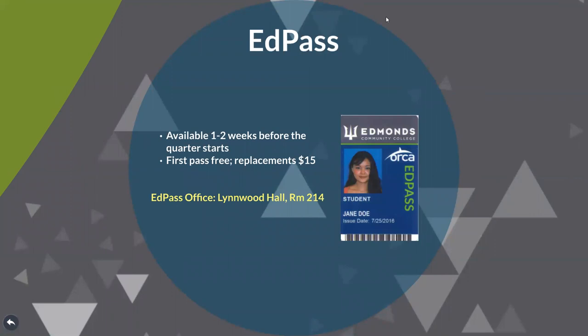As a student on campus, it is important to have an EdPass and a parking permit if you intend to drive. You can pick up your EdPass one to two weeks before classes start, as long as you've registered for classes that quarter. The EdPass office is located in Linwood Hall, room 214. Your EdPass functions as a library card, printing copy machine card, and a campus cash card. You can also use your EdPass as an ORCA card at a reduced student price for public transit. Your EdPass is required to access gymnasium facilities and acts as your proof of identification on campus.